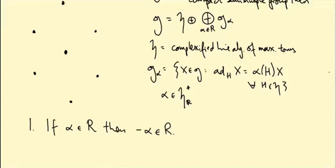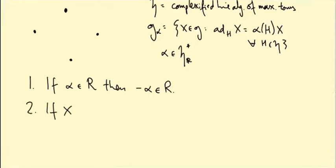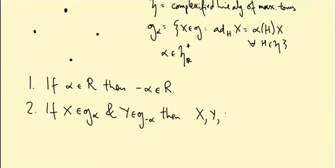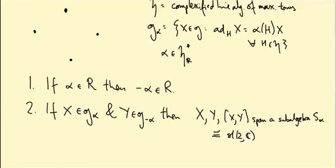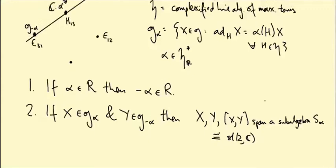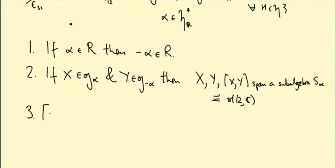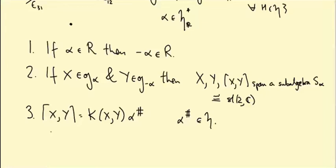Each root occurs with an opposite root. We've seen that if x is in g_alpha and y is in g_{minus alpha}, then x, y, and their Lie bracket span a subalgebra of little g isomorphic to little sl(2,C). I'll call this s_alpha. Partway through the proof of this we showed a useful lemma: x bracket y equals k(x,y) times alpha sharp, where alpha sharp is the Killing form dual of the root alpha, so alpha sharp is an element of little h dual to alpha under the Killing form.